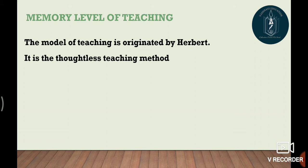In primary classes, students are simply told and made to learn things. As we move to junior classes — Class 6, 7, 8 — formulas are also taught, so understanding is developed. Further ahead, when full maturity is there, students can understand topics on their own — that is where Reflective Level is used. Memory Level of Teaching is essentially a thoughtless teaching method.